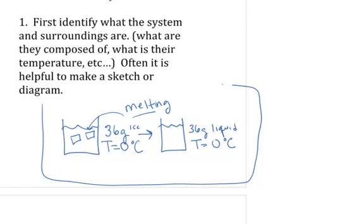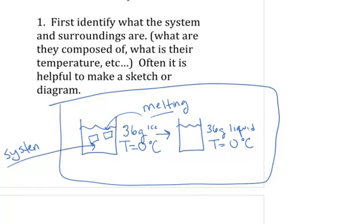The surroundings. This is our system, the melting of the ice. The surroundings is the room, the rest of the room, and it is at a temperature of 25 degrees Celsius. So that is our system, the ice melting, and our surroundings is everything else.